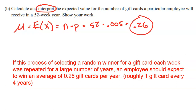If this process of selecting a random winner each week were repeated for a large number of years, and each year I tracked how many gift cards I won — zero one year, one the next, zero again, two another year — in the long run, after many years, the average number of gift cards won would be 0.26 per year. That's roughly one gift card every four years, since 0.26 is close to one quarter.